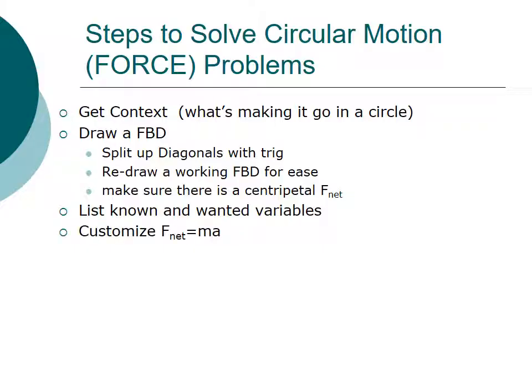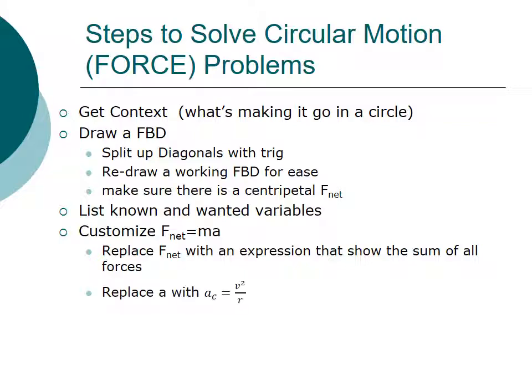Next, we pick an equation. But for forces specifically, we always use the same equation, which is F net equals M A. In our case, we always want to also customize that equation, F net equals M A. We do that in several ways. First of all, we always take the F net and replace it with an expression that shows the sum of all forces. We'll show some examples of that later. And then lastly, because it's circular motion, we'll take the A in F net equals M A and replace it with V squared over R because that A has to be centripetal or pointing towards the center.